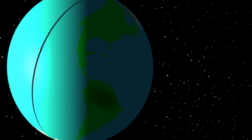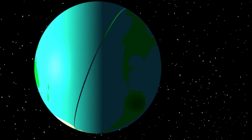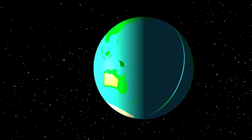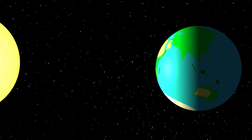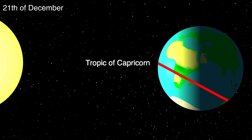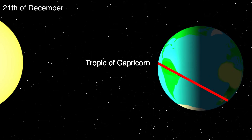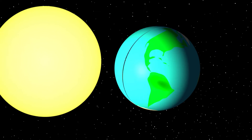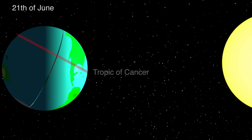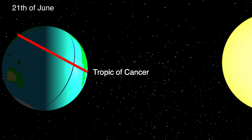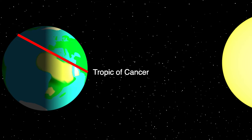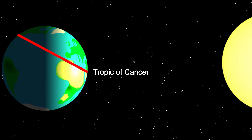Because the Earth's axis is tilted, the energy of the sun isn't directed to the equator every month. At the 21st of December, the Tropic of Capricorn — a latitude circle 23 and a half degrees south of the equator — receives the most energy. In the northern hemisphere this is called the winter solstice. Half a year later, at the 21st of June, the sun gives the most energy to the Tropic of Cancer, a latitude circle 23 and a half degrees north of the equator, causing the summer solstice in the northern hemisphere.